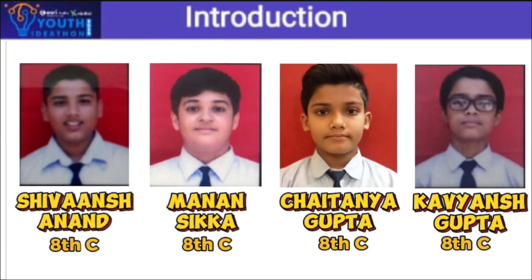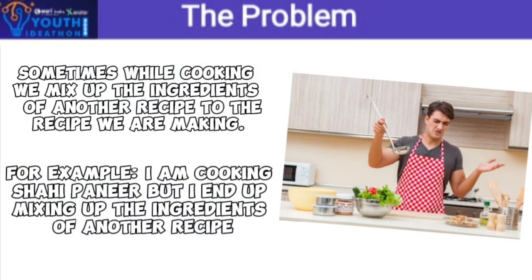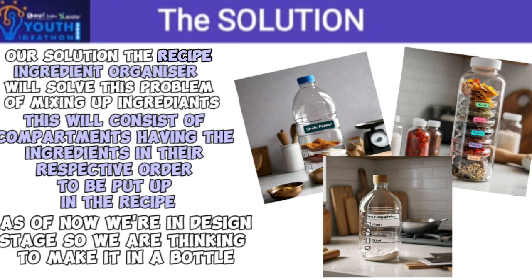Our team consists of these four members. The problem is that sometimes while cooking we mix up the ingredients of another recipe into the recipe we are making. For example, I am cooking shahi paneer but I end up mixing the ingredients of another recipe. Our solution: the Recipe Ingredient Organizer will solve the problem of mixing up ingredients.